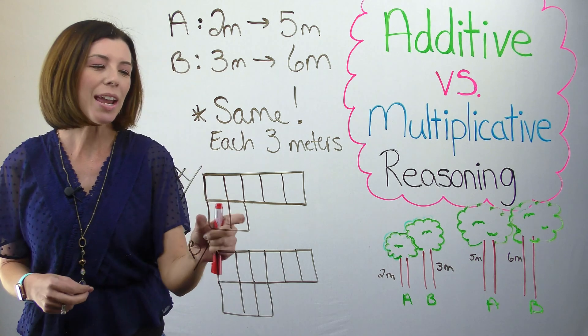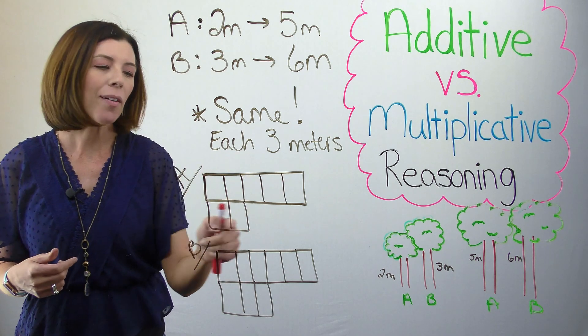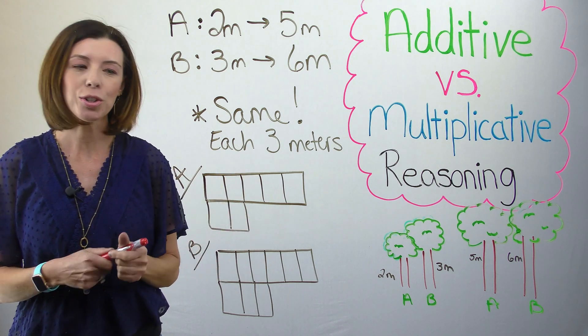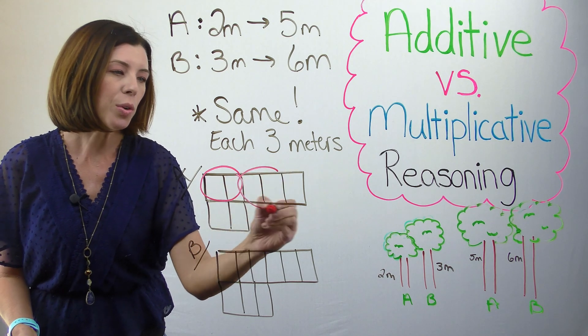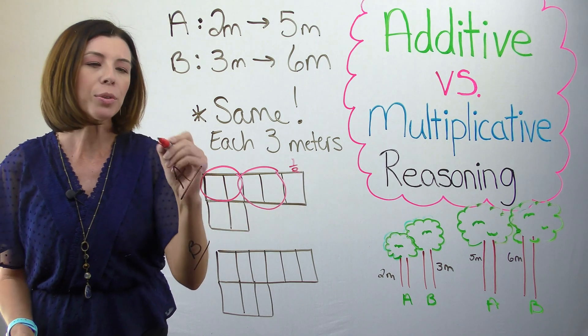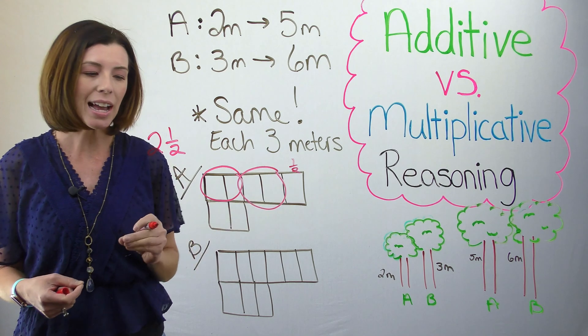I can see that tree A went from two meters to five meters. And I'm thinking about how many copies of this original tree are in the larger tree. So I can see that I have one, two, and this piece is half of that, right? So I could say that tree A grew two and one half times the original size.